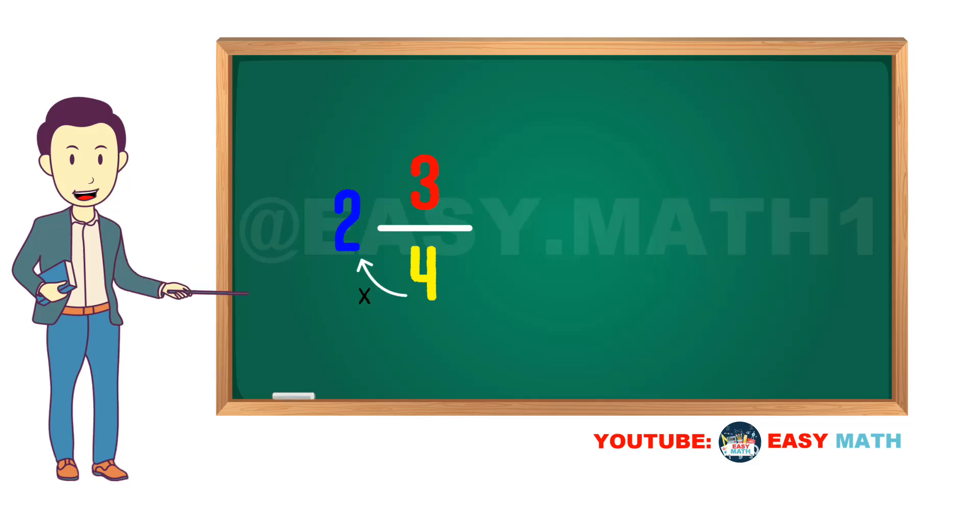First we have to multiply the denominator by the whole number and then add the numerator to its result. So here first we have to multiply 4 times 2, it will be equal to 8.